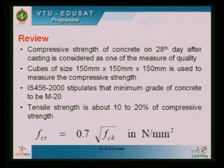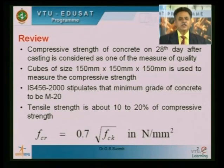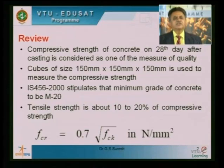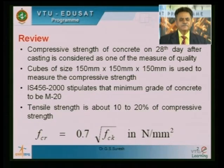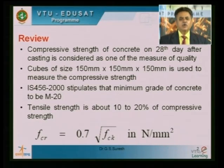IS456 stipulates that the minimum grade of concrete to be M20 for reinforced concrete. Though we neglect the tensile strength of the concrete, whenever we want to calculate the cracking moment we use the tensile strength, which is 10 to 20 percent of compressive strength. However, the code gives the tensile strength FCR — called modulus of rupture — as 0.7 root FCK, which is in Newton per mm squared.